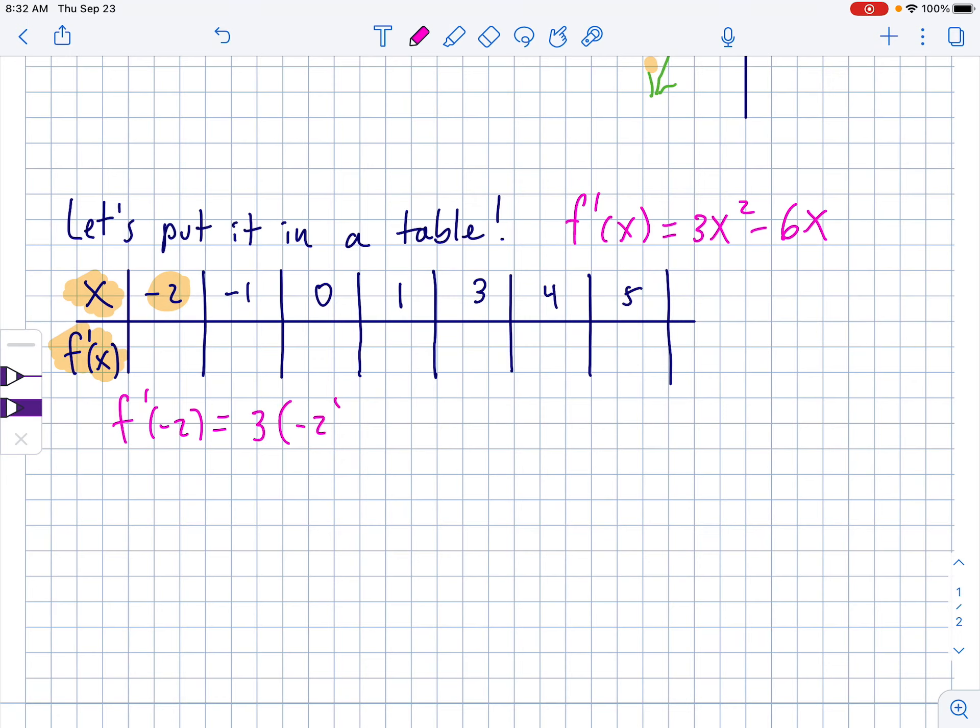So, what I'm going to do is plug in a negative 2 into the derivative. So, f prime of negative 2 is equal to 3 times negative 2 squared minus 6 times negative 2. Now, negative 2 squared is 4 times 3 is 12, then negative 6 times negative 2 is positive 12 as well, so I believe this is 24.